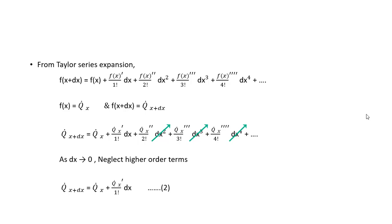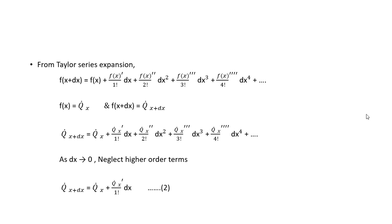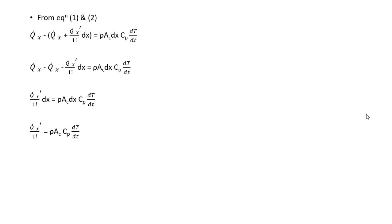Using equations 1 and 2, we substitute q̇_(x+dx): q̇_x minus [q̇_x plus (dq̇_x/dx)·dx] equals rho·A_c·dx·c_p·(dT/dt). Opening the bracket: q̇_x minus q̇_x minus (dq̇_x/dx)·dx equals rho·A_c·dx·c_p·(dT/dt). The dx terms cancel, giving us: dq̇_x/dx equals rho·A_c·c_p·(dT/dt).